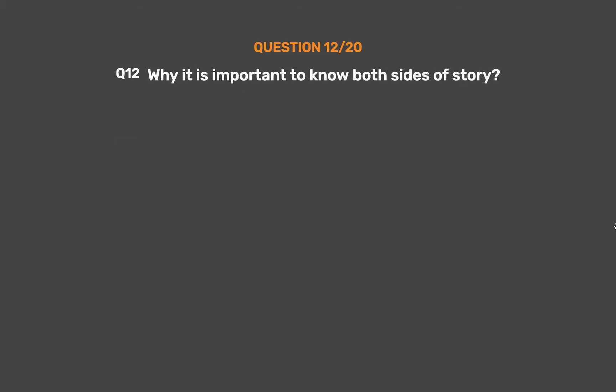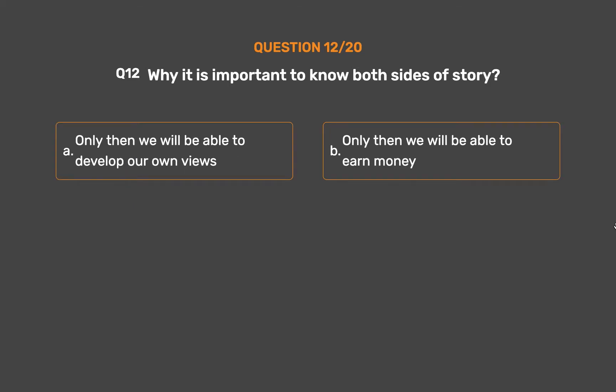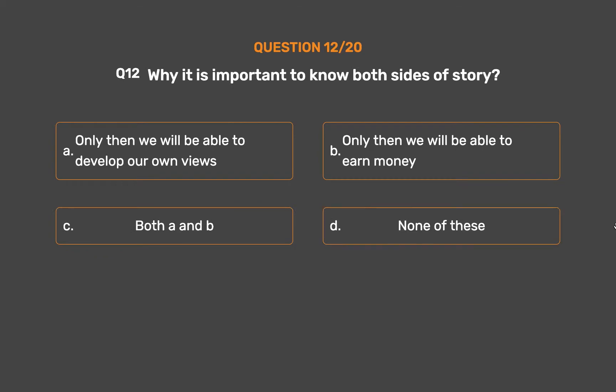Question number 12. Why is it important to know both sides of a story? Option A: Only then we will be able to develop our own views. Option B: Only then we will be able to earn money. Option C: Both A and B. Option D: None of these.